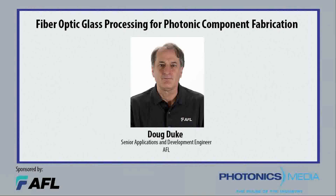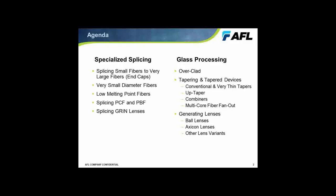We'll start with some of the specialized splicing applications. In the 1970s, splicing came to the fore for fiber optics, primarily for multi-mode and then single-mode fibers. But today in the photonic area, we have to deal with a tremendous variety of diameters, fiber compositions, and fiber types. After that, we'll go into glass shaping and glass processing, overclad operations, and various aspects of tapering and lensing. Many of these applications can be combined to create a great variety of devices.